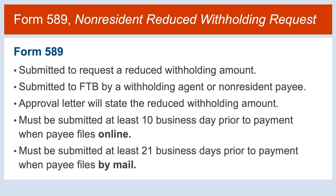Form 589 Non-Resident Reduced Withholding Request is filed by a non-resident payee to request a reduced withholding amount. The standard withholding amount is 7% of the California source payments made to non-residents. Form 589 allows the non-resident payee to deduct their expenses and calculate the 7% withholding using the net amount of the payment. The total amount of expenses cannot exceed 50% of the gross California source payment. Requests can be submitted online or by mail. If submitted online, the request must be submitted 10 business days prior to the payment. If submitted by mail, the request must be submitted 21 business days prior to payment.